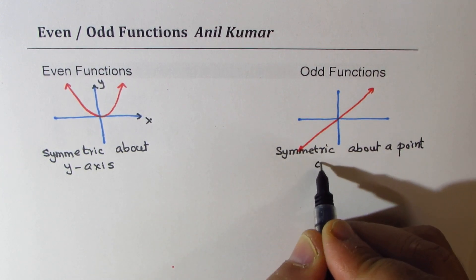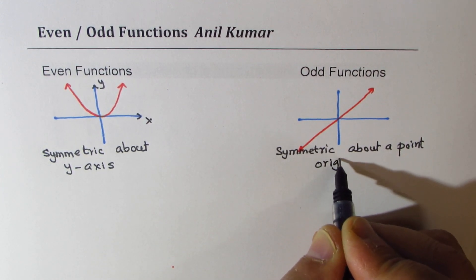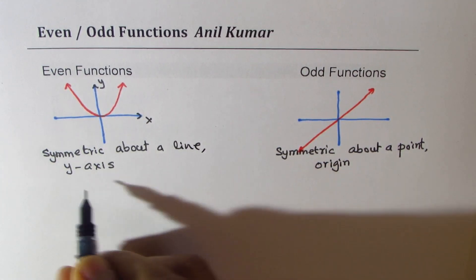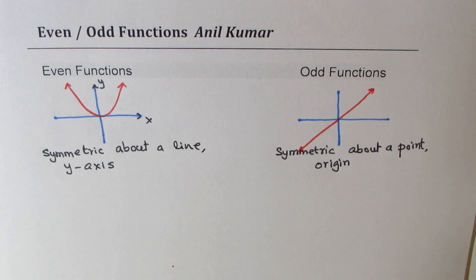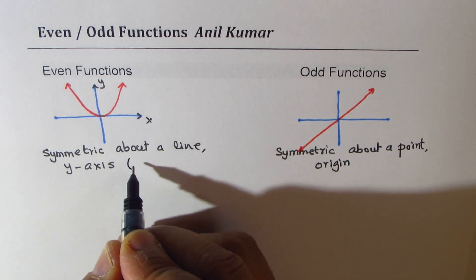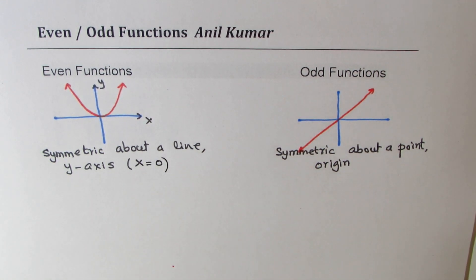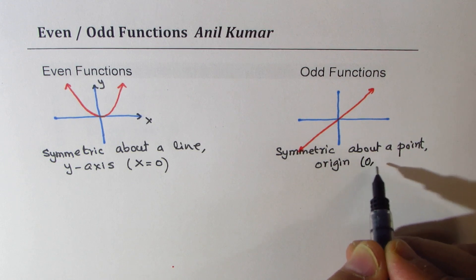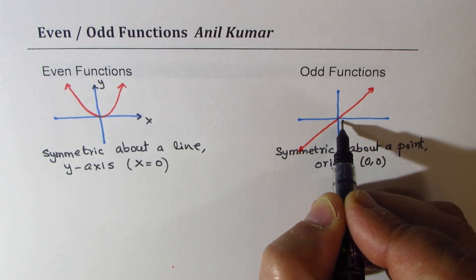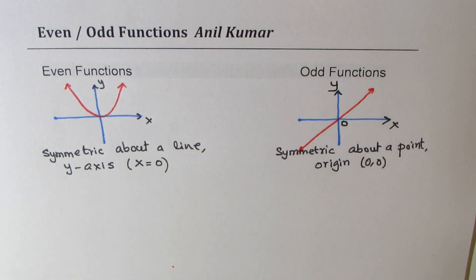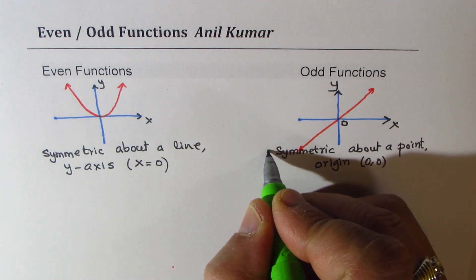We normally say it is about a point which is the origin. In the even case, it is about a line — the y-axis — whose equation is x equals to 0. For the odd case, it is about the origin, which is (0, 0). That is how we figure out even and odd functions from a graph.